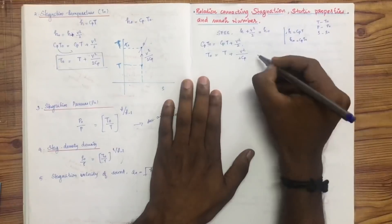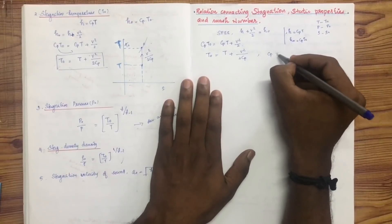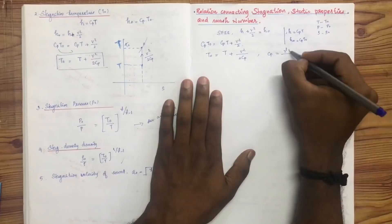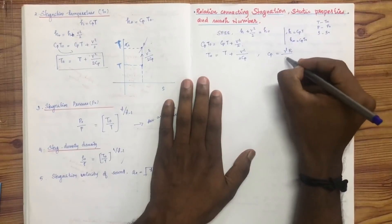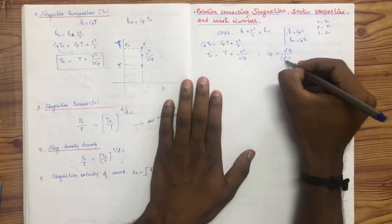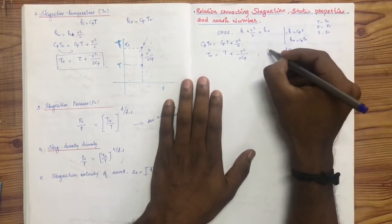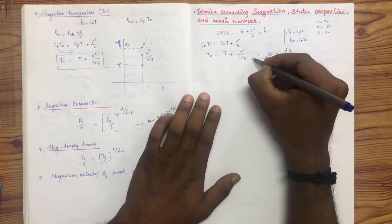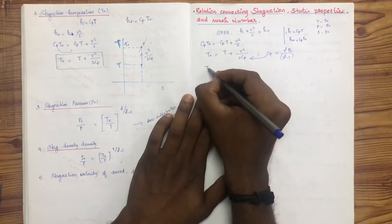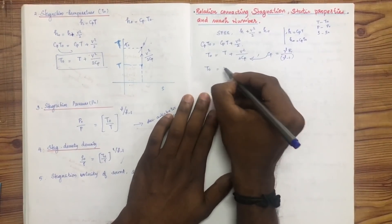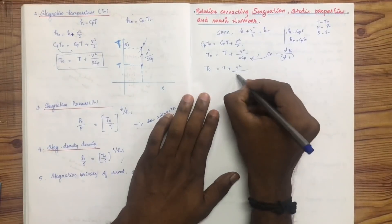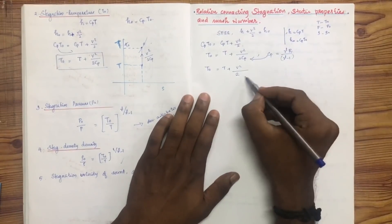We substitute the specific heat at constant pressure Cp in terms of gamma and R, giving Cp equal to gamma R divided by gamma minus 1. Substituting into the energy equation: T0 equals T plus V squared by 2 times gamma R divided by gamma minus 1.